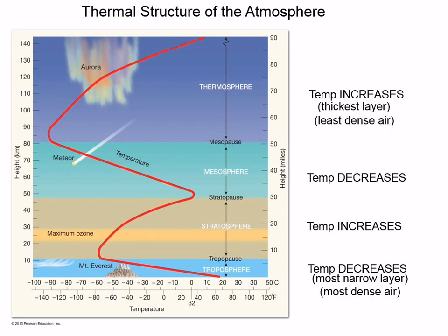The troposphere is the squattiest layer. The thermosphere's air is so thin up there that it's hard to define where the Earth's atmosphere ends versus just miscellaneous gas particles floating around.